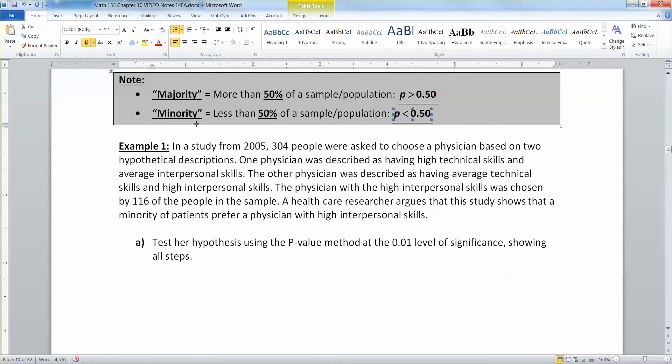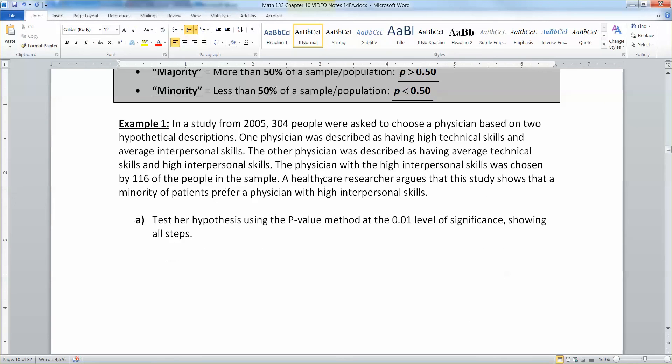That would be p is less than 50%. So, just keep that in mind. Those two words kind of crop up for us sometimes, and majority means more than 50%, minority means less than 50%. Alright, in a study from 2005, 304 people were asked to choose a physician based on two hypothetical descriptions. One physician was described as having high technical skills and only average interpersonal skills.